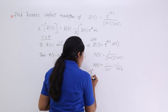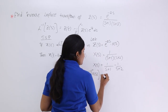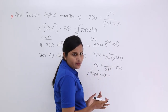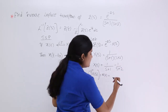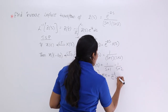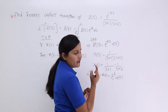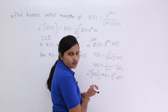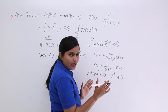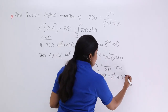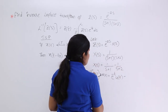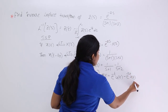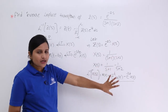If we consider the inverse Laplace transform of X(S), we get X(T). The inverse Laplace of 1/(S+1) is e^(-T)·U(T), since whenever you have e^(-at) in the time domain you get 1/(S+a) in the S-domain. Similarly, the inverse Laplace of 1/(S+2) is e^(-2T)·U(T). So X(T) = e^(-T)·U(T) - e^(-2T)·U(T).